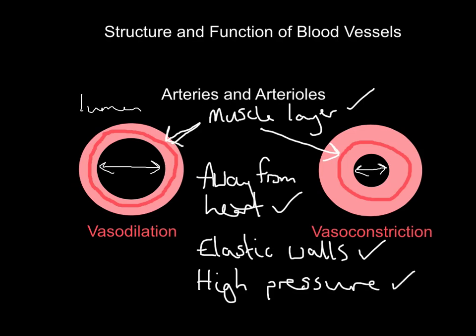Finally, arteries also carry blood at high pressure — the highest blood pressure you will find is blood traveling in arteries. So to summarize the four key things about arteries: they have a muscular layer so they can vasodilate and vasoconstrict; they always carry blood away from the heart; they have elastic walls; and they carry blood at high pressure.